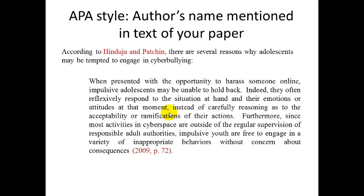Just like with MLA style, when I have an APA style citation and I've already mentioned the names of the authors — Hinduja and Patchen — in the text of my own sentence, I do not need to include the author's names in the parenthetical in-text citation. I can just jump right to the year — 2009, comma, p. 72. I don't need to repeat the names of the authors because I already said them. A reader will understand where the information is coming from. That's always the key thing: does the reader have enough information to find the source?